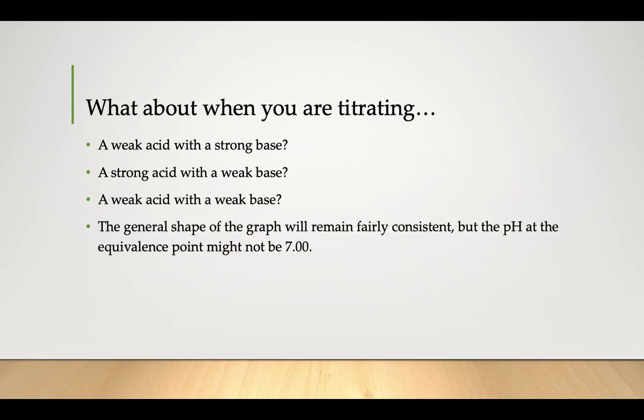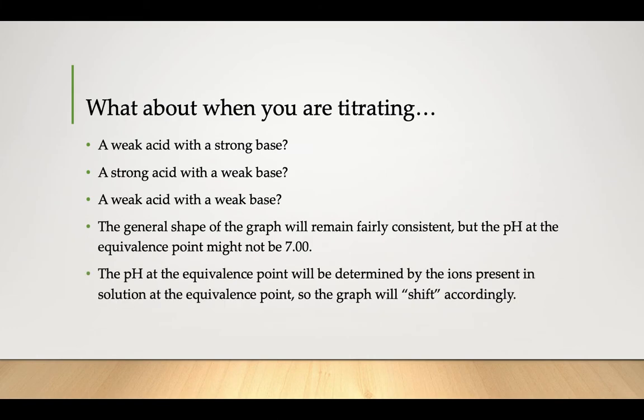Well, the general shape of the graph stays fairly consistent, but the pH at the equivalence point might not be 7. The pH at the equivalence point is determined by the ions present in solution at that equivalence point. So while the shape of the graph is pretty consistent, the numbers will shift depending on where that equivalence point is, before or after 7.